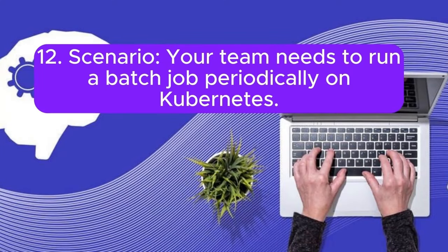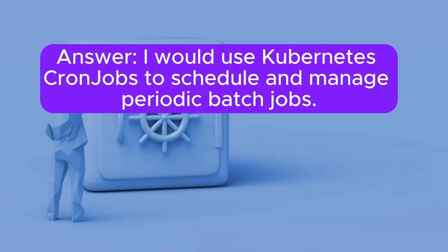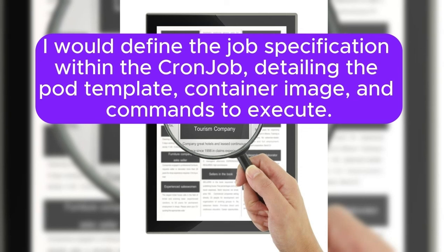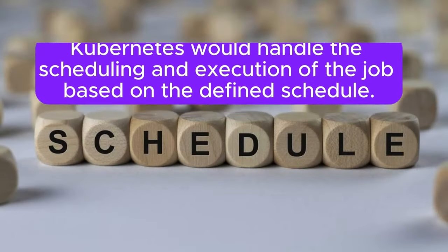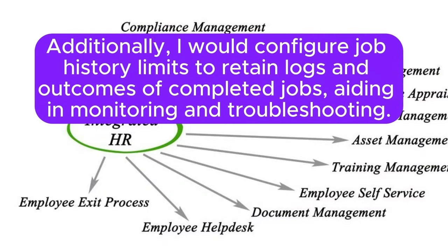Scenario 12: Your team needs to run a batch job periodically on Kubernetes. How would you schedule and manage these jobs? Answer: I would use Kubernetes CronJobs to schedule and manage periodic batch jobs. A CronJob resource allows specifying a cron schedule for when the job should run. I would define the job specification within the CronJob, detailing the pod template, container image, and commands to execute. Kubernetes would handle the scheduling and execution of the job based on the defined schedule. Additionally, I would configure job history limits to retain logs and outcomes of completed jobs, aiding in monitoring and troubleshooting.